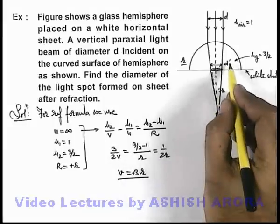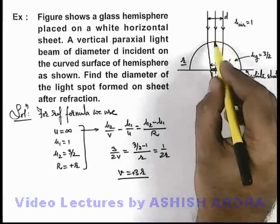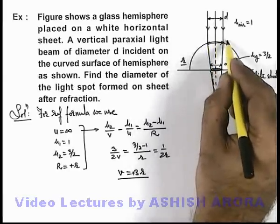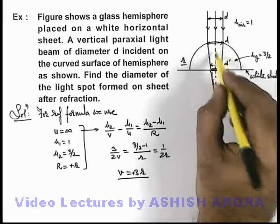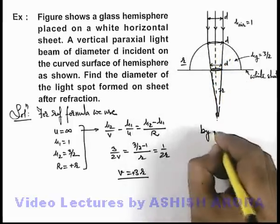We are required to find the diameter of this spot which will be produced on the sheet. This can be obtained by using similarity in these triangles. As the diameter of the beam is d, and this distance is R, this is 2R, here by similarity: